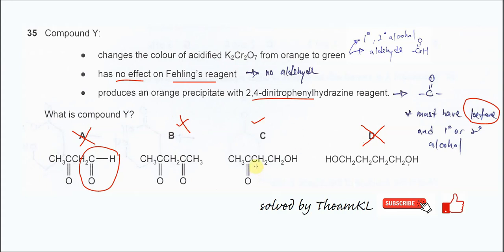Answer is C because it has a carbonyl group, the ketone, and it has a primary alcohol which can be oxidized by this potassium dichromate. So answer is C. That's all, thank you.